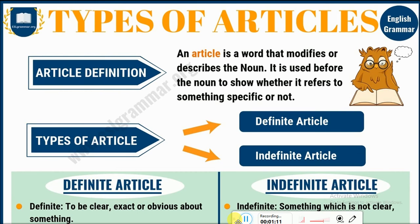First of all, we have types of articles. But before we know the types والأنواع, we will define the article. رح نعرف شو معنى article in English. An article is a word that modifies or describes the noun — بتحدد, modifies or describes the noun. It's used before the noun — غالباً بيجي قبل الاسم. To show whether it refers to something specific or not — عشان نعرف هل هادا الاشي محدد ومعروف ولا مش معروف.